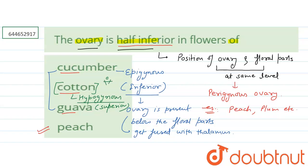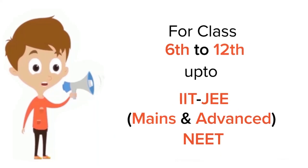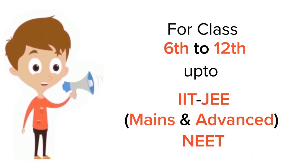So cucumber is not the right answer, cotton is not the right answer, and guava is not the right answer. The correct answer is option number four — peach.